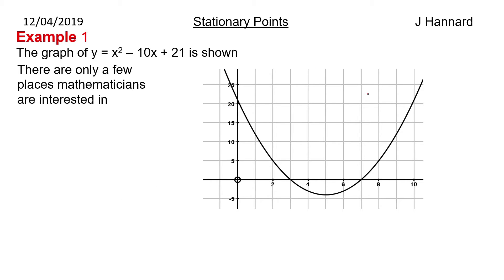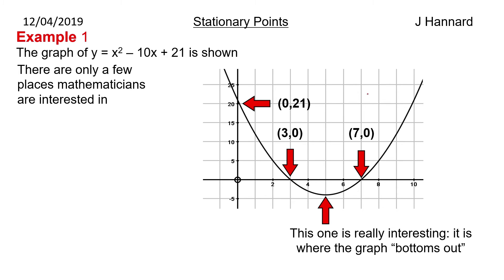Example 1: The graph of y equals x squared minus 10x plus 21 is shown. There are only a few places mathematicians are interested in. We've got the y-intercept which is at 0, 21, and then we've got a couple of x-intercepts there at 3 and 7. And there's also this point here where it's really interesting, it's where the graph actually bottoms out.